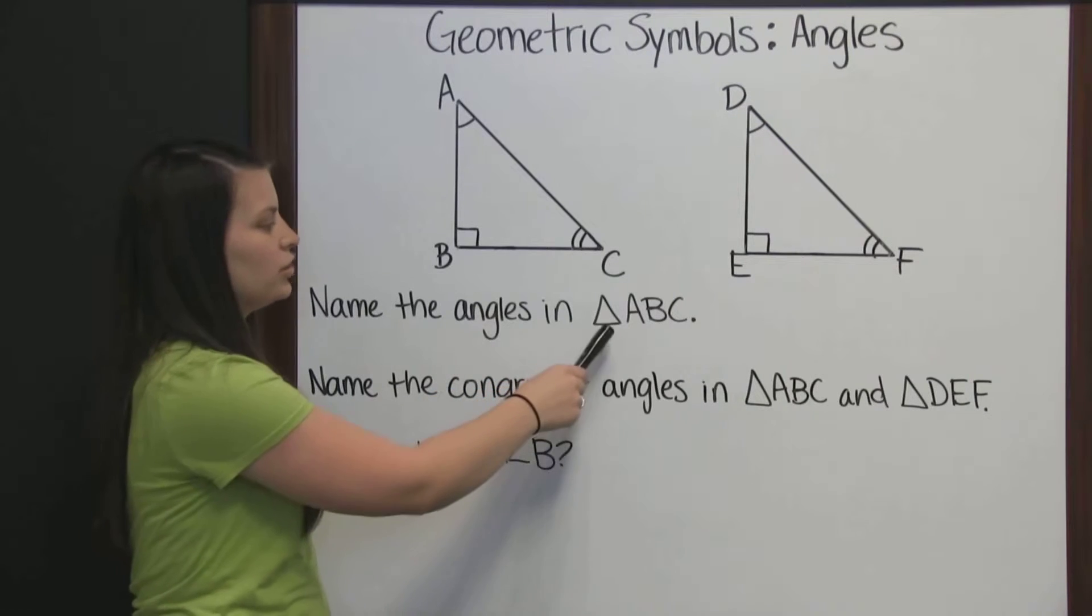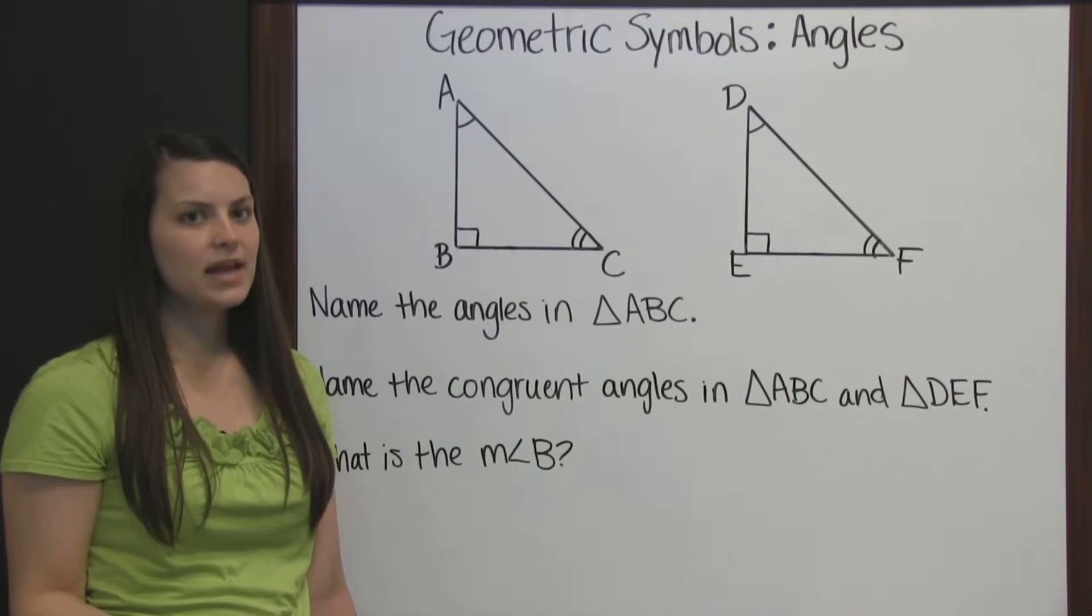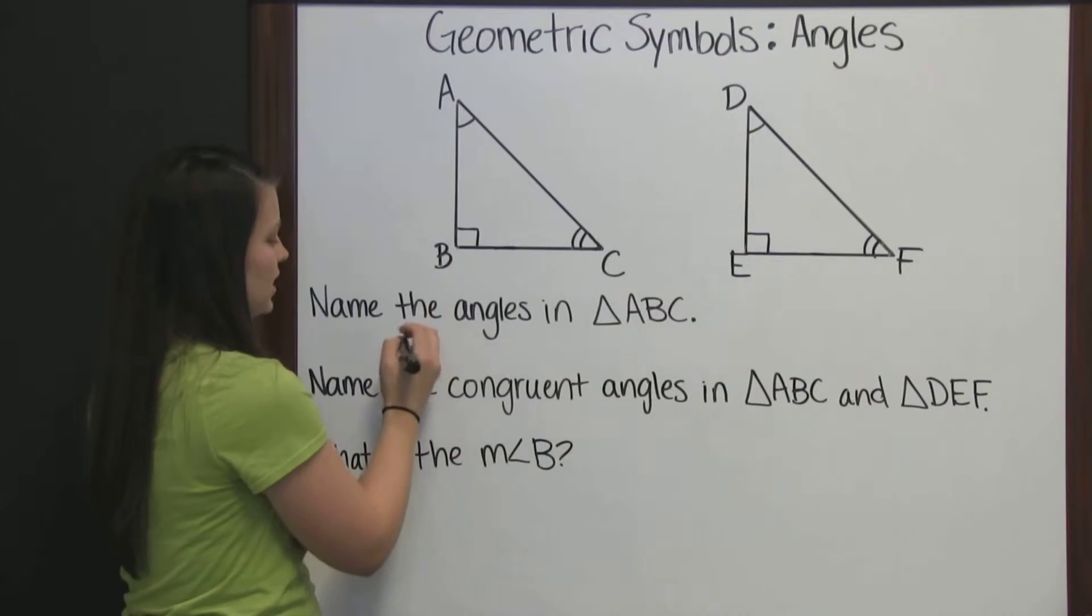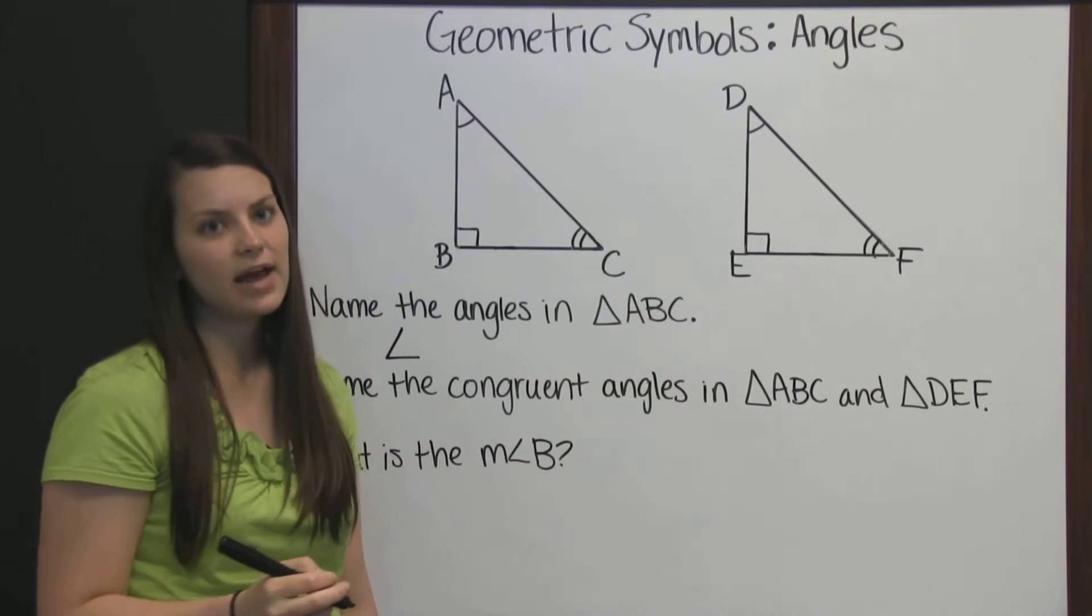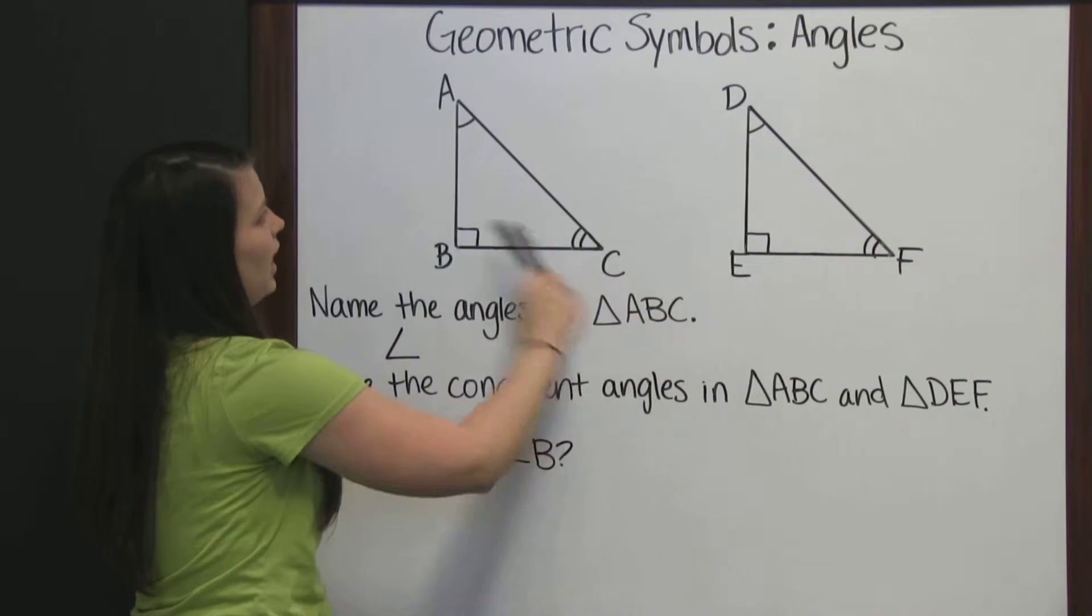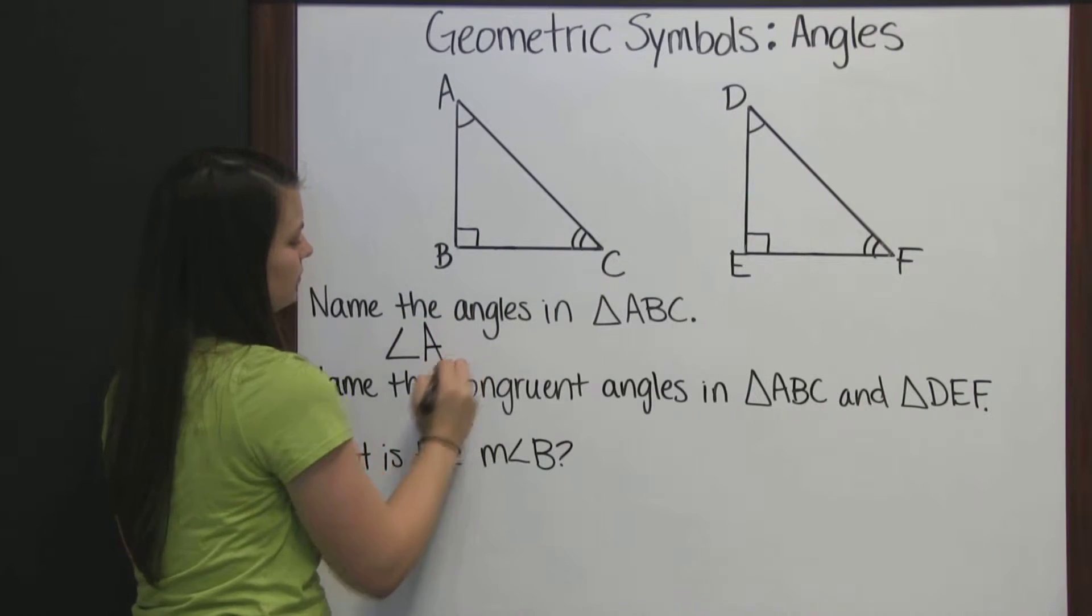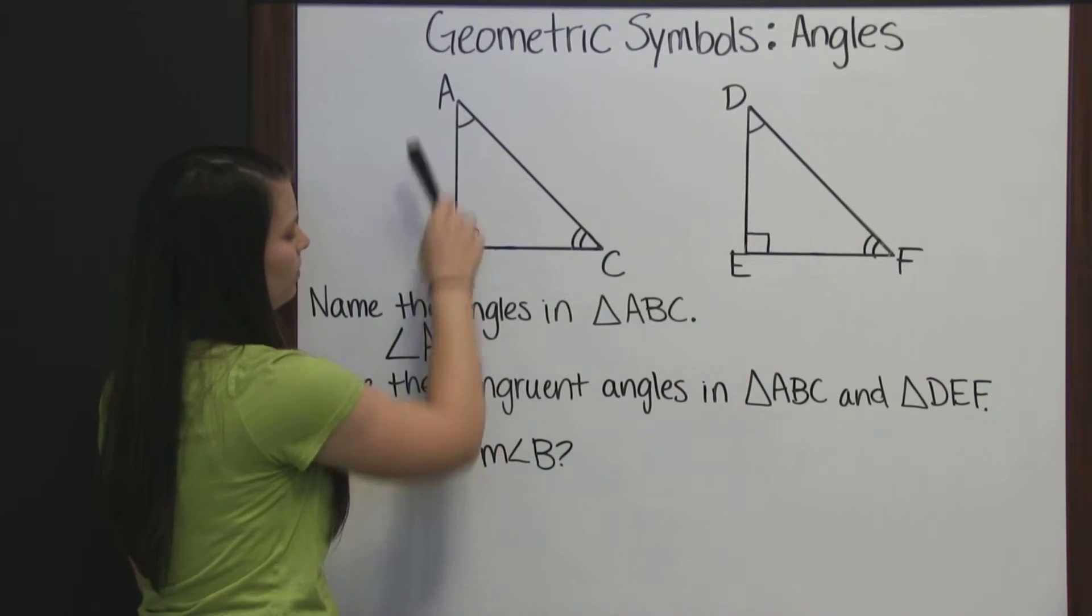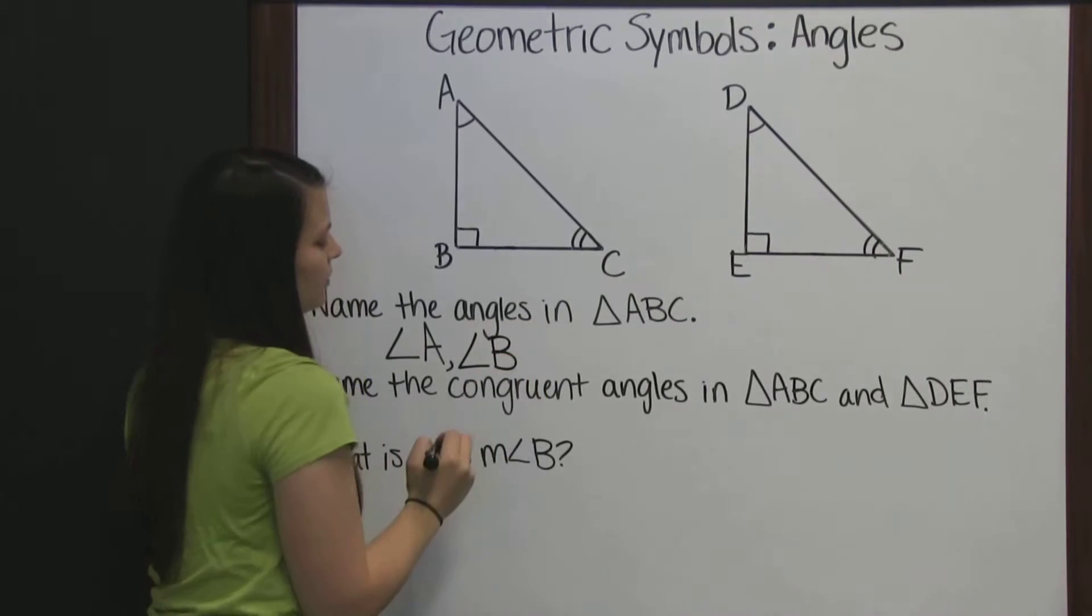The first question is, name the angles in triangle ABC. There are a couple of different ways to name angles. One way is to use the angle symbol and just the letter of the vertex. So we would call this angle A, since A is the vertex. This angle would be called angle B. We use the angle symbol and the letter for the vertex.